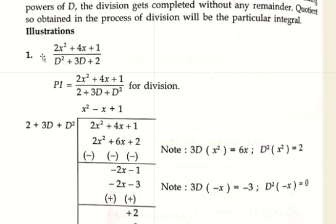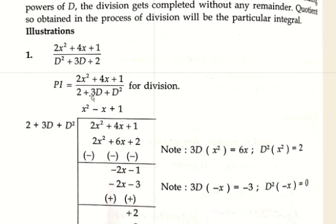For example, consider (2x² + 4x + 1) / (D² + 3D + 2). To write the particular integral, write the numerator in decreasing power of x: 2x², then 4x, then 1. Write the denominator f(D) in ascending power of D: first the constant 2, then 3D, then D². This is the increasing power of D.